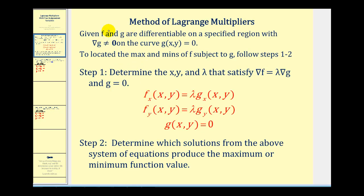If we're trying to maximize or minimize f with a constraint g, and if they are both differentiable on a specified region, and the gradient of g does not equal the zero vector on the curve g(x, y) = 0, we'll follow two steps to locate the max and mins of f. We'll determine x, y, and lambda based upon the equation: the gradient of f equals lambda times the gradient of g, and the constraint g equals zero. The result is a system of equations where the first two involve the partial derivatives of f and g, and the third will be the constraint.